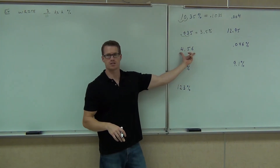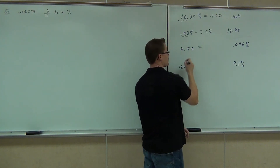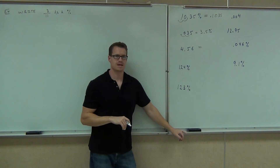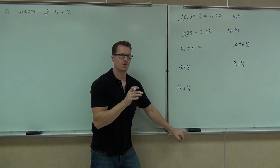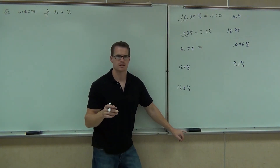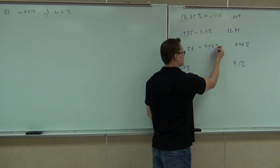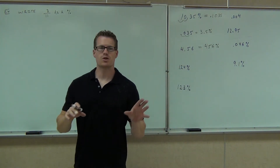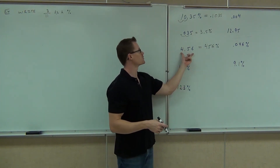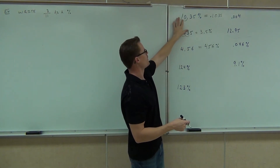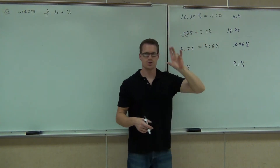Here I have a decimal. I need to change that to a percent. So do I move left or right? It doesn't have the percent, so I'm multiplying by 100. That means it's either 0.0456 or 456 — which one is it? 4.56. The way you double-check your work: make sure the percent looks like a bigger number. Does 456 look bigger than 4.56? Yes. Does 10.35% look bigger than 0.1035? Yes. The percent should always look like a bigger number than the decimal.